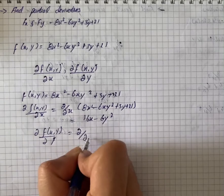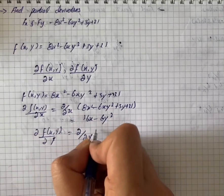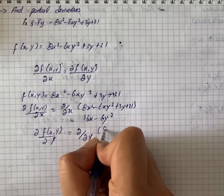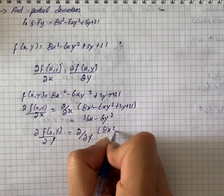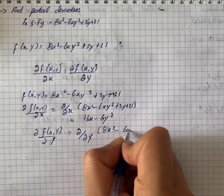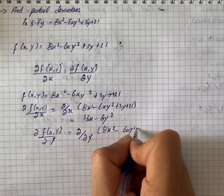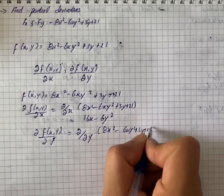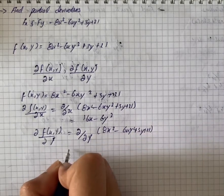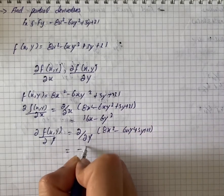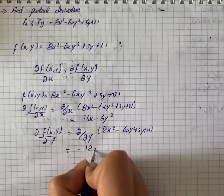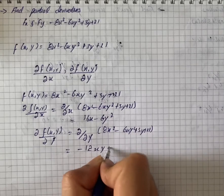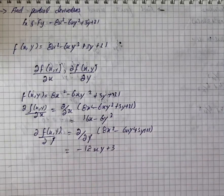And ∂f(x,y)/∂y is equal to ∂/∂y of (8x² - 6xy² + 3y + 21), which equals -12xy + 3.